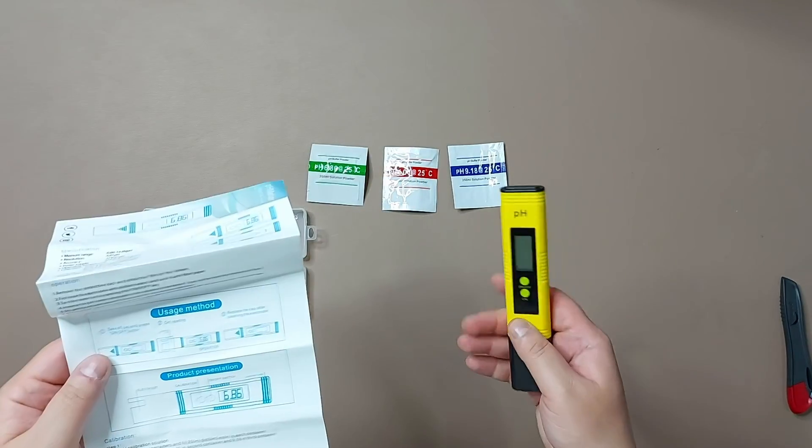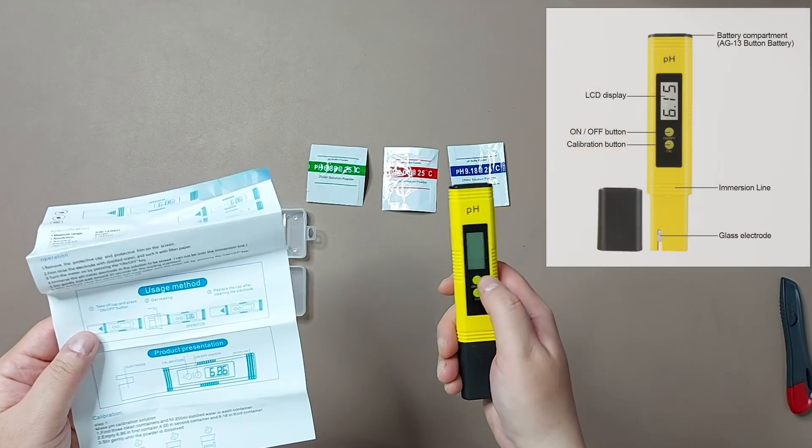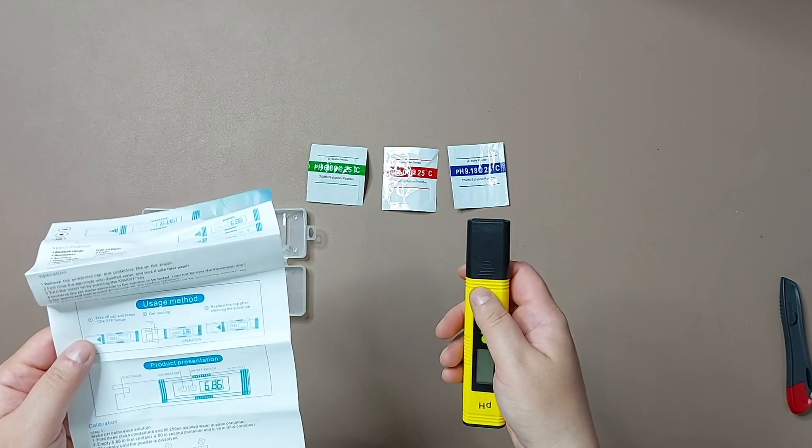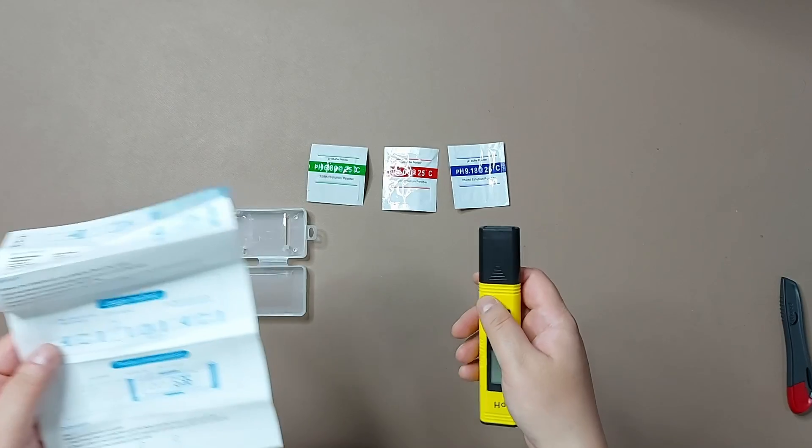Let's have a look here. Take off the cap and press the on-off button to have the measurement. After cleaning the electrode you should close it again. First of all, we should make calibration solution, and this is why these three powders are here.